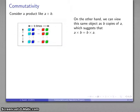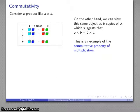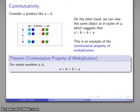And that suggests that this product, A copies of B or B copies of A, will do the same thing. That A times B is equal to B times A. And this is an example of what's called the commutative property of multiplication. For whole numbers A and B, the product is the same, no matter which direction you do it.